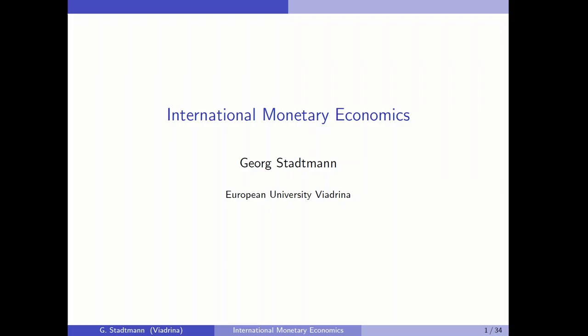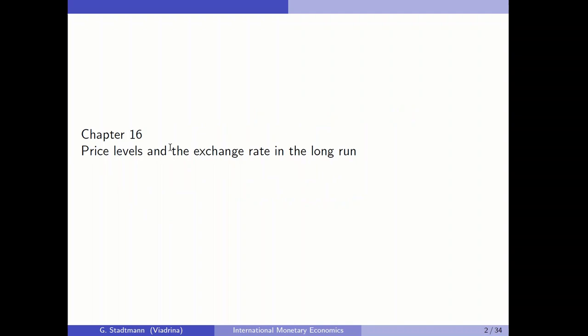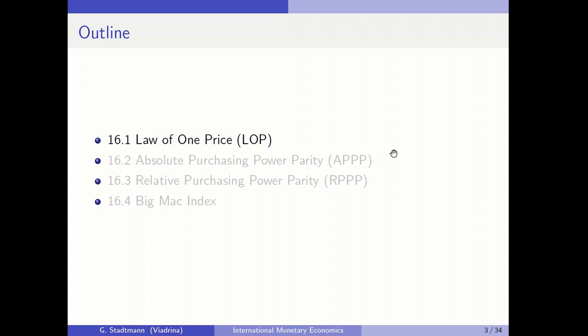Welcome to chapter 16, where we talk about price levels and the exchange rate in the long run. We have four different topics in this chapter: the law of one price, absolute purchasing power parity, relative purchasing power parity, and the Big Mac index. In part 16.3 on relative purchasing power parity, I'll also present a regression analysis to test this theory.